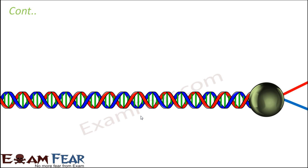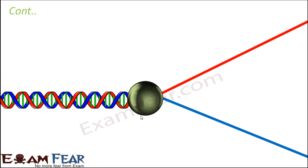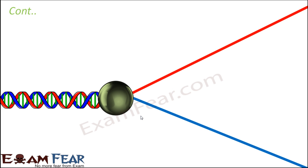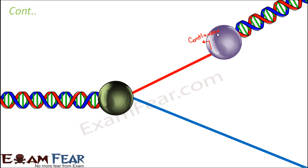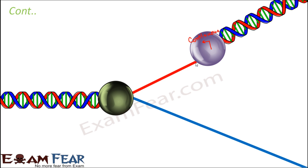Let us look at the animation. First, helicase moves and separates the two strands by breaking hydrogen bonds. On the continuous synthesis strand — the leading strand — DNA polymerase comes into picture, reads the sequences on this strand, creates the complementary strand, and these two strands together form a new DNA altogether. This is how continuous synthesis takes place.